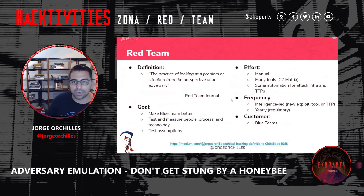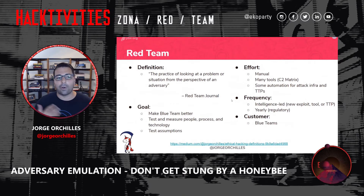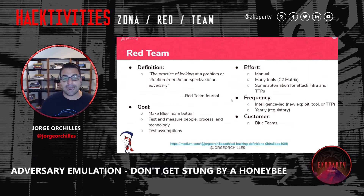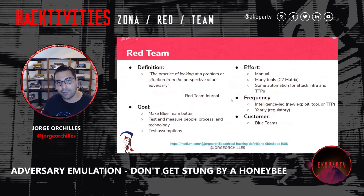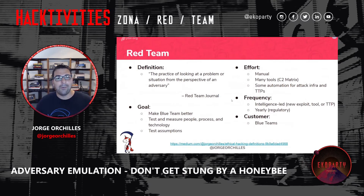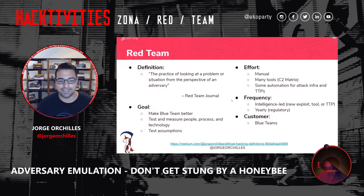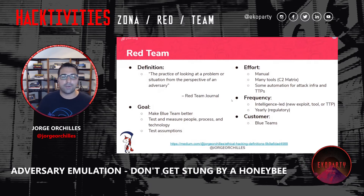Let's dive deeper into the red team. The definition of a red team is a practice of looking at a problem or situation from the perspective of an adversary. This came from the military — back during the Vietnam War, the US didn't do so well, so they decided to test themselves and really be a devil's advocate. One of the original red teams were devil's advocates: when someone was going to get sainthood, they would play the devil's advocate's role and see if they really deserved it. A red team does that — they test assumptions and look at the situation from an adversary's perspective.